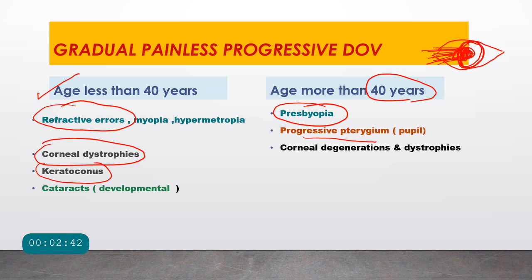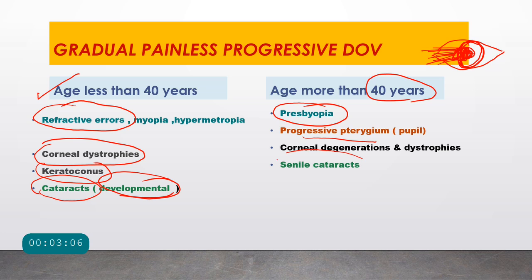Moving to the lens: the cause of gradual painless progressive diminution of vision in age less than 40 years is cataract — specifically developmental cataract in younger age groups, as it is painless. In age above 40 years, we get senile cataract.